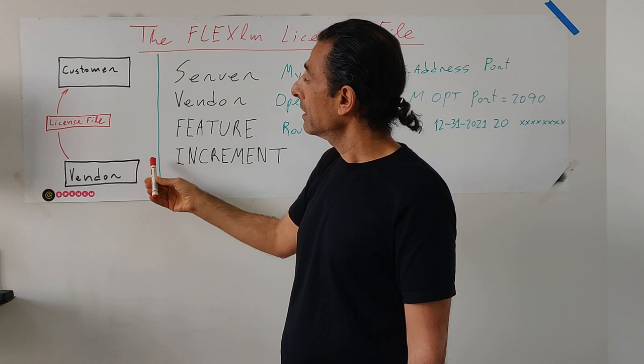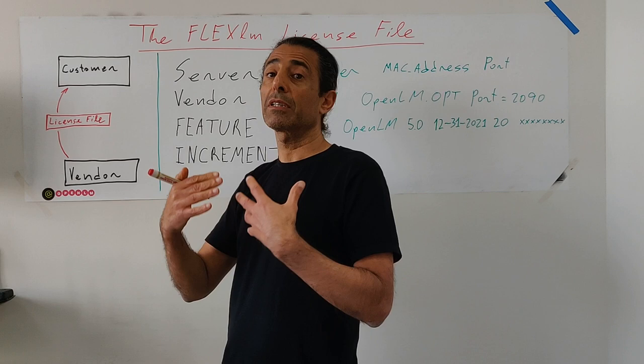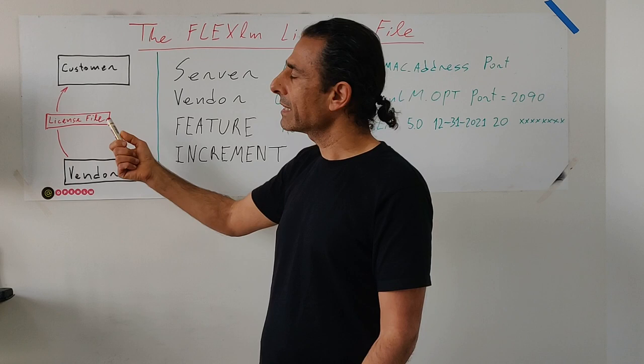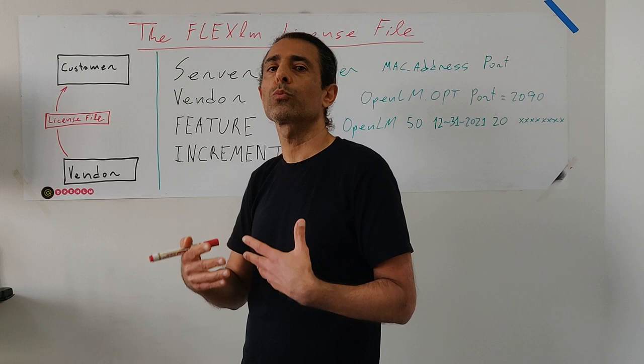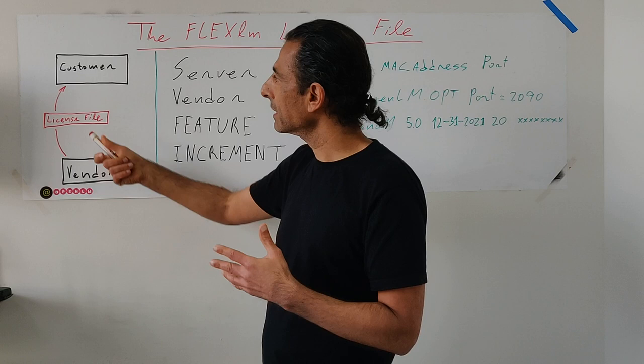In engineering licenses, the process works like this: the vendor — the one who prepares the software — sends it to the customer. He provides the software but also a license file. That's a text file, and within this file we find the entitlements — what we are licensed to use. It goes to the customer, the customer puts it in the right place, and then the software starts to work.